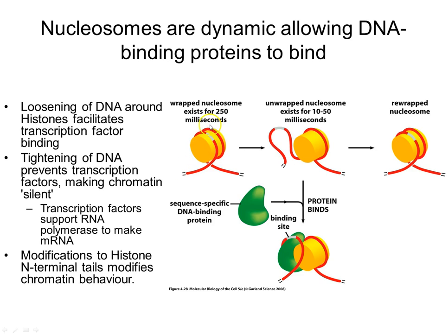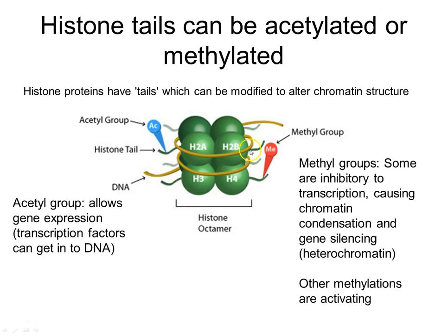When DNA is wrapped tightly around histones, transcription factors can't get in and bind to their binding sites. This is why compact chromatin is silent and loose chromatin is potentially transcribable — because transcription factors can access and bind to the DNA where the transcription factor binding sites are.